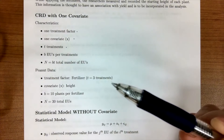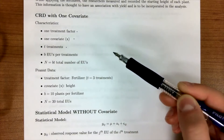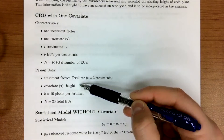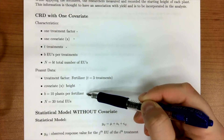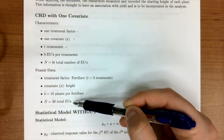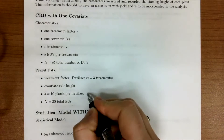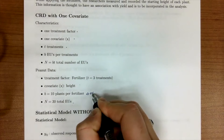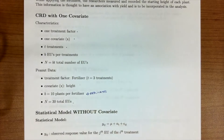For our peanut data, we have three treatments for the fertilizer, height as our covariate, 10 plants per fertilizer — which are our replications — and a total of 30 EUs. I'll show you the data in the next lesson.